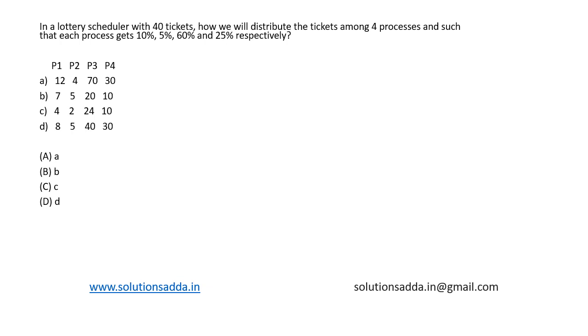This is a question from operating system: In a lottery scheduler with 40 tickets, how we will distribute the tickets among four processes such that each process gets 10%, 5%, 60%, and 25% respectively? The options are given as follows.